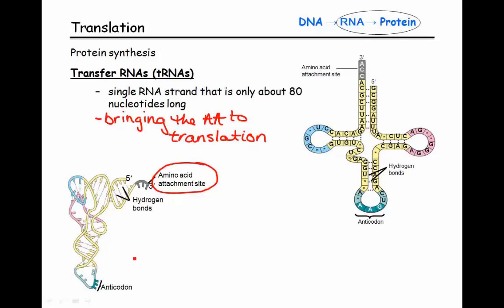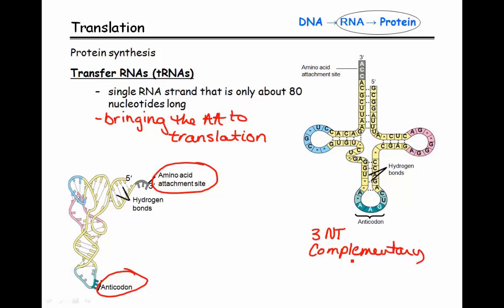On the other end is what we refer to as the anticodon. Zooming in on the anticodon, it is three nucleotides long, and it is going to be complementary — meaning opposite — a codon. The codons themselves, if you recall, were the three-nucleotide words used to specify an amino acid.